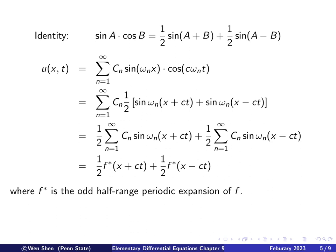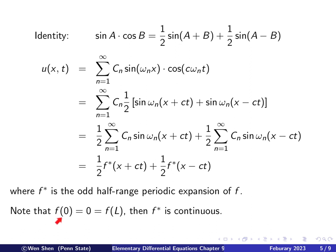Repeating: f* is the odd half-range periodic expansion of f, which is defined only on the interval from 0 to l. Also, thanks to the boundary condition f(0) equals f(l) equals 0, the odd periodic expansion f* is a continuous function — there will be no discontinuities at the endpoints when you expand it.